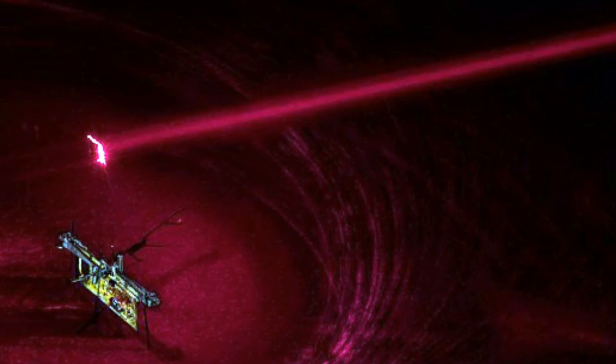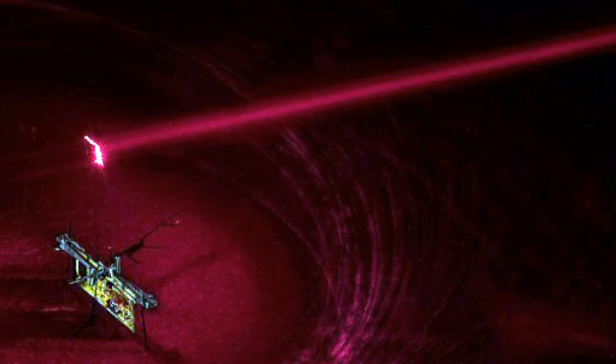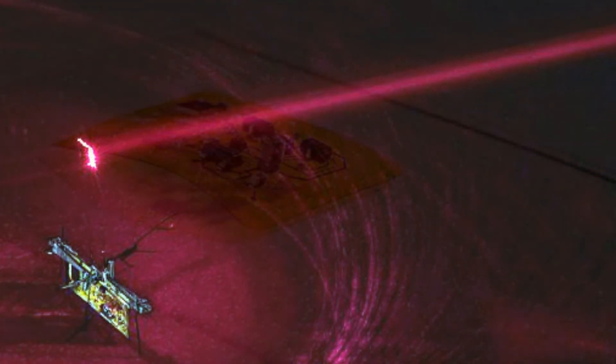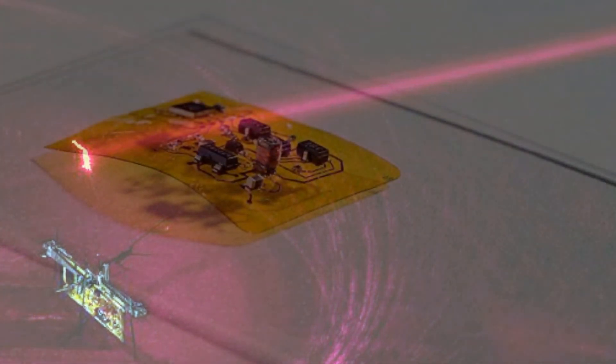RoboFly is fully autonomous now. It uses a narrow invisible laser beam to power the robot. They pointed the laser beam at a photovoltaic cell, which is attached above RoboFly and converts the laser light into electricity.